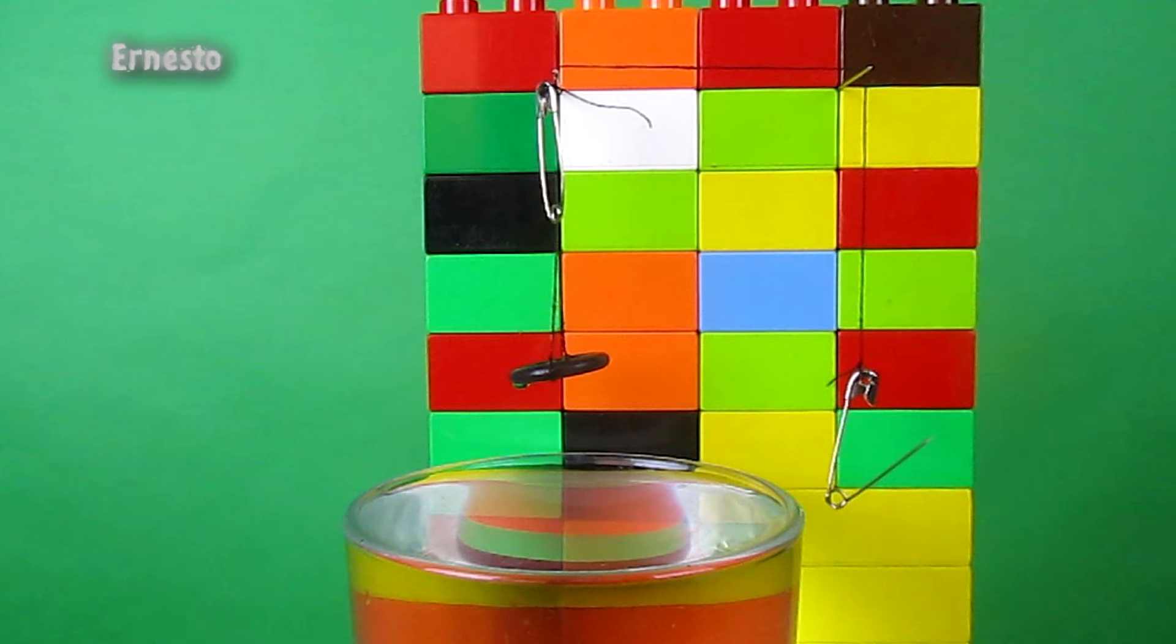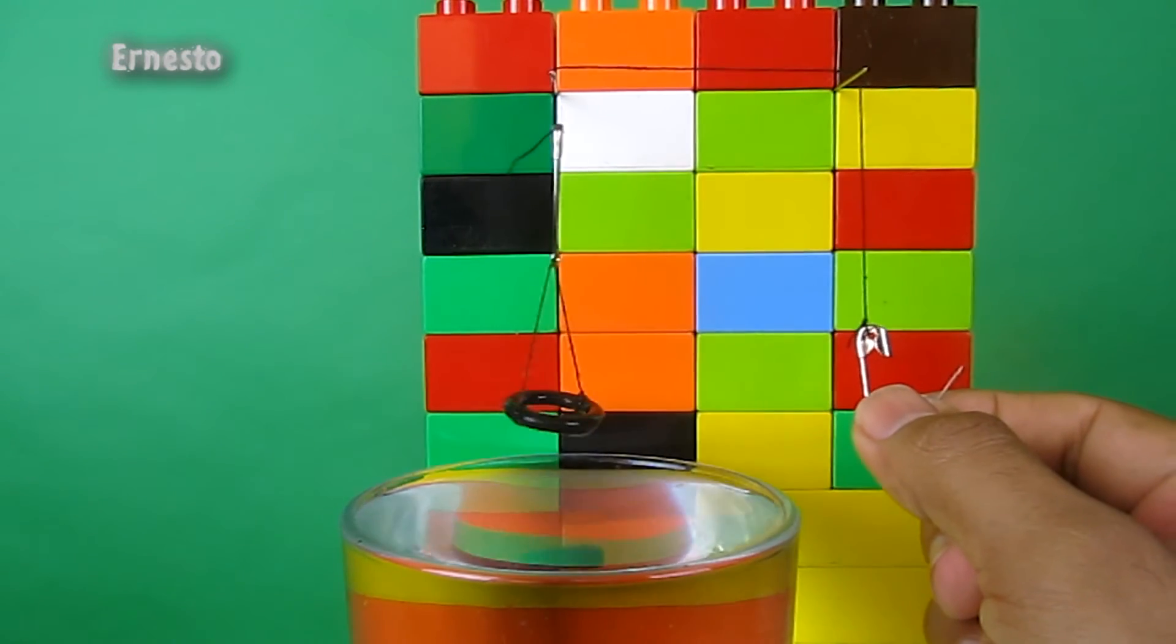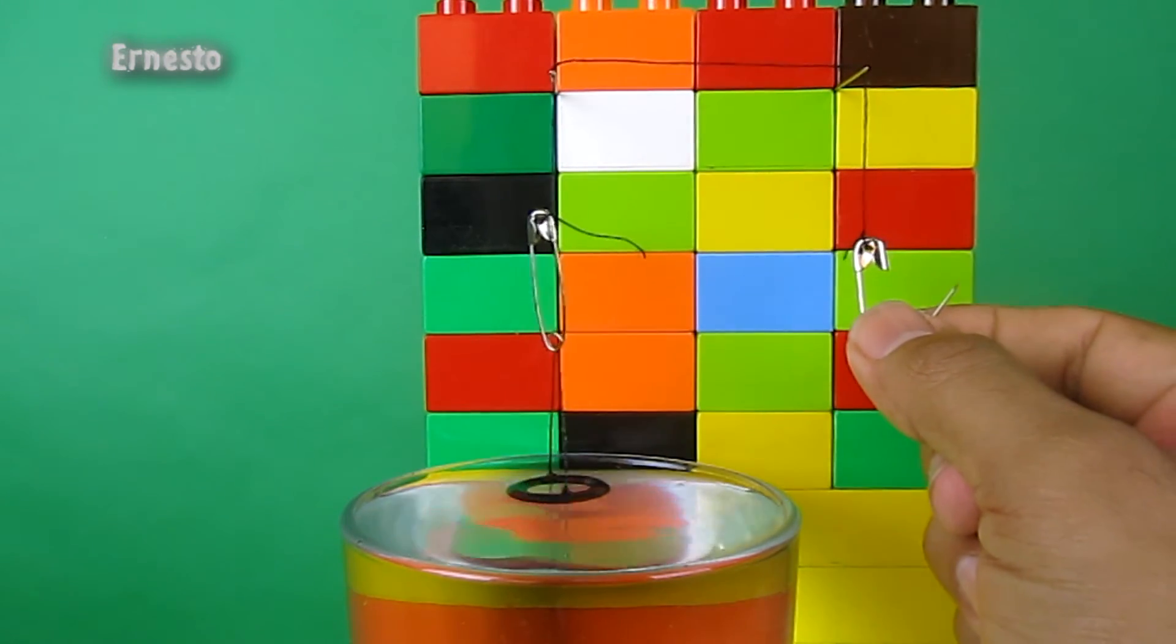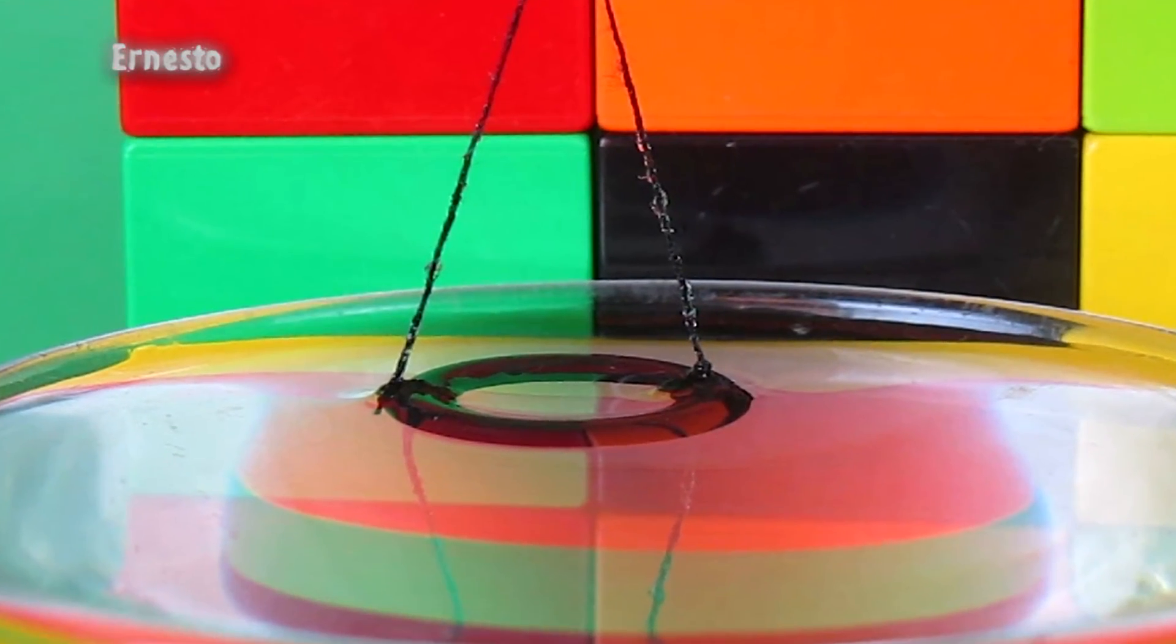Attach an O-ring on one end of the thread and something like a hook on the other end. Place a glass of water and start lowering the O-ring until it touches the water.